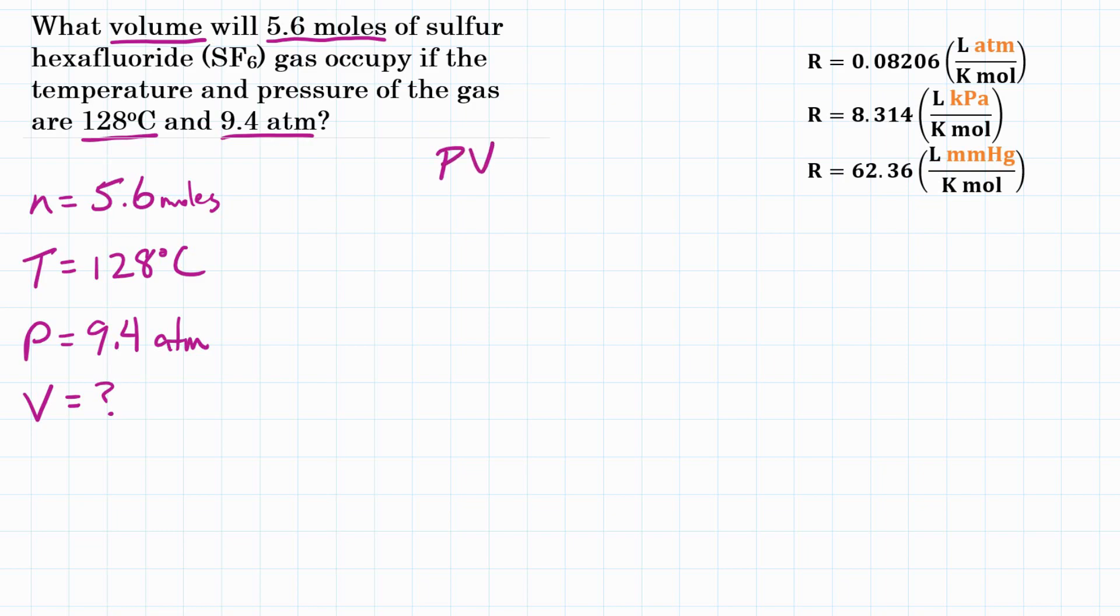otherwise sometimes known as PIVNRT, is PV equals nRT. We have three of the variables given to us. One that we are looking for and the fifth, R, is the universal gas constant, which we will later pick from the available options.